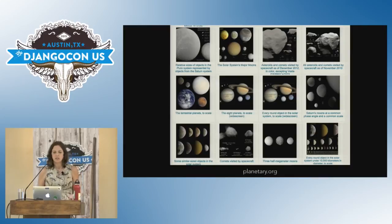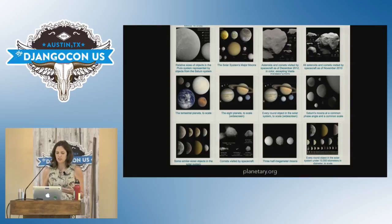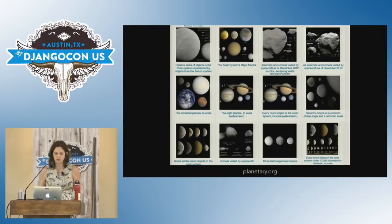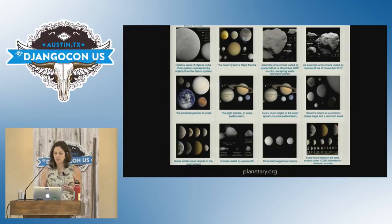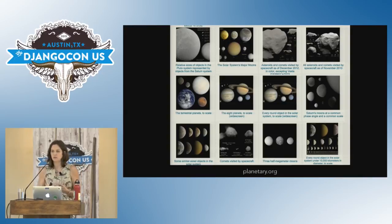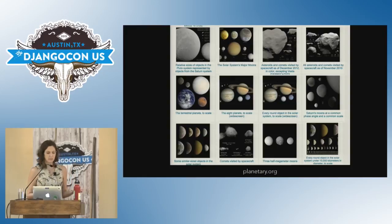Not only do scientists use it, but science journalists occasionally use it as well. At the website planetary.org, you can find collections of complete composite images created by senior editor of the Planetary Society, Emily Lakdawalla. She's a scientist turned journalist who creates composite images showing various planetary bodies in the same image to show scale comparisons and raise awareness about our solar system.